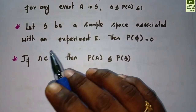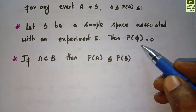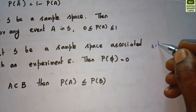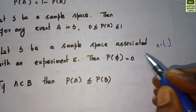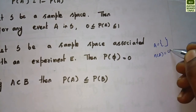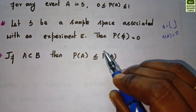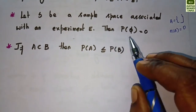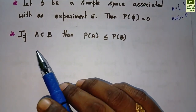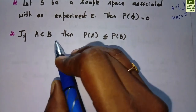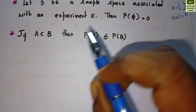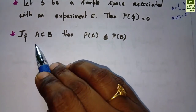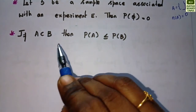Let S be a sample space associated with an experiment. Then P(∅) = 0 — the probability of the null set is equal to zero. This is because if the event is a null set, n(A) = 0, so n(A)/n(S) = 0. Also, if A is contained in B, then P(A) ≤ P(B) — that is, if A is a subset of B, then the probability of A is less than or equal to the probability of B.